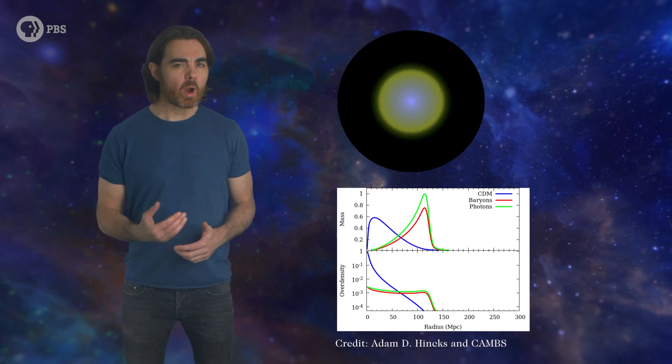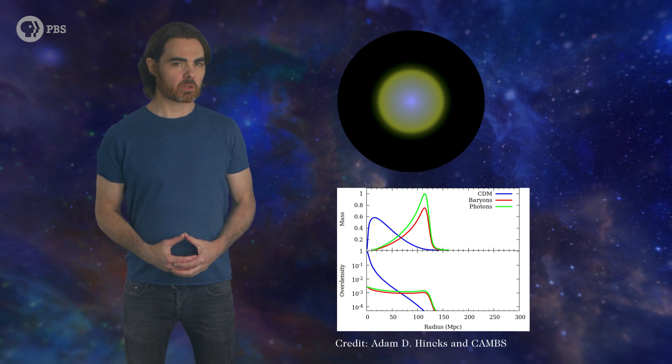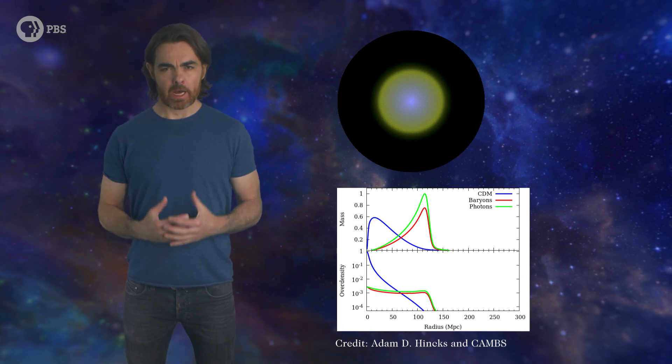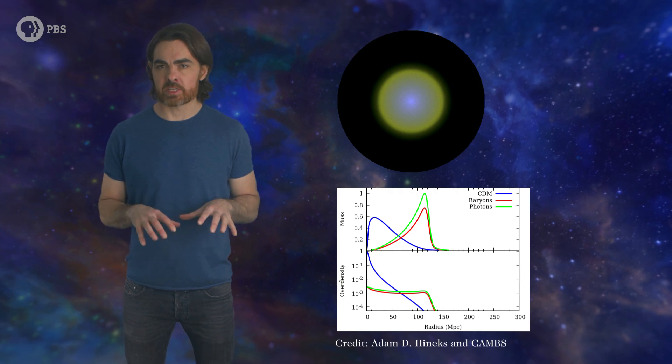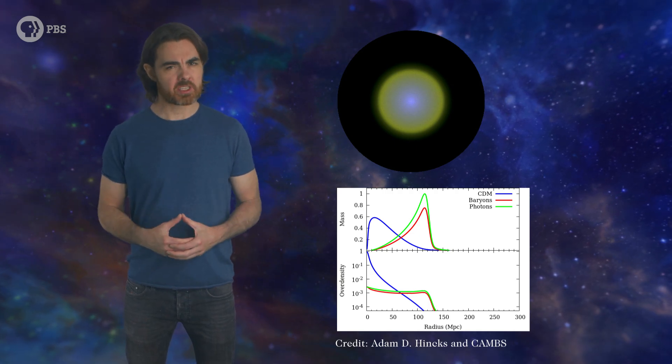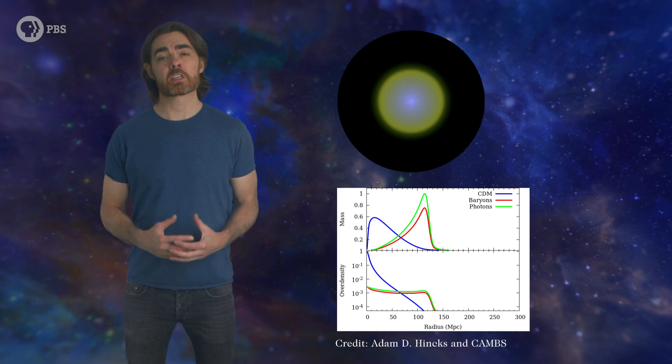But also at that density peak, the imprisoned photons exerted an enormous outward pressure. To equalize this pressure, radiation pushed outwards and carried the baryons with it. This resulted in an acoustic wave, a true sound wave in the form of an expanding shell of increased density. And remember, sound traveled at over half the speed of light back then, so the shell expanded fast.